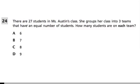In this question, they say that there are 27 students in Miss Austin's class. What she does is group her class into three teams that have an equal number of students. How many students are on each team?